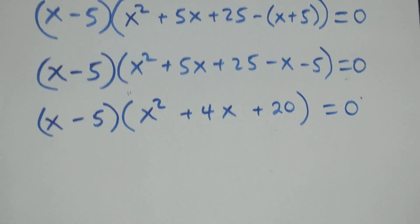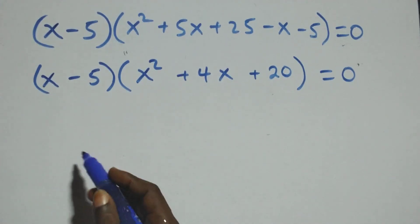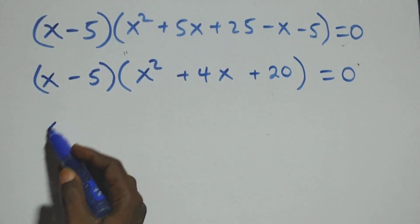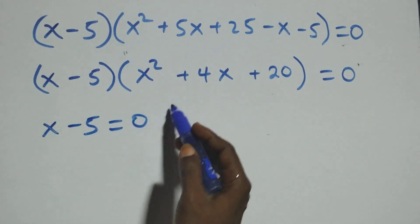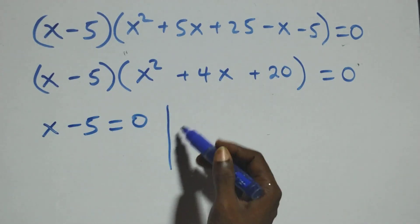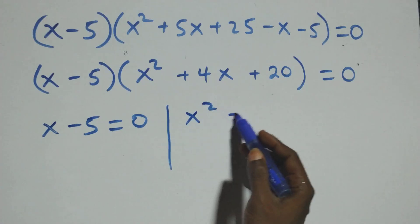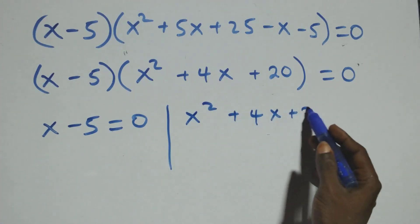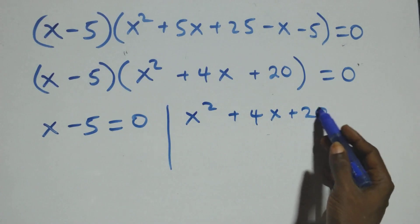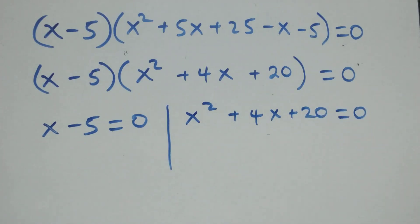We now have two possible cases: the first is x minus 5 equals to zero, or we have x squared plus 4x plus 20 equals to zero.